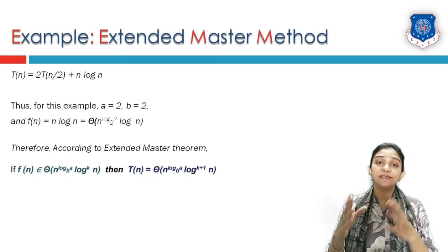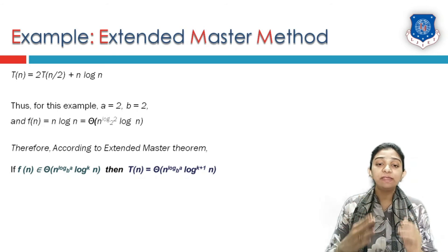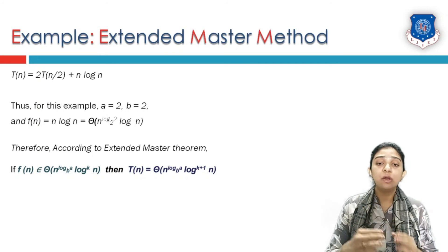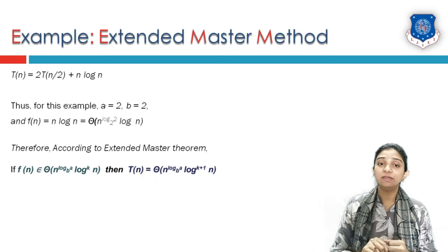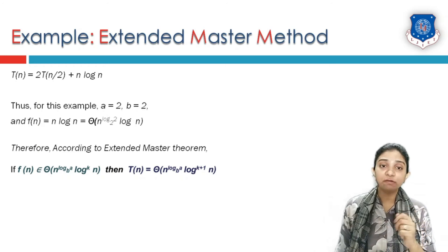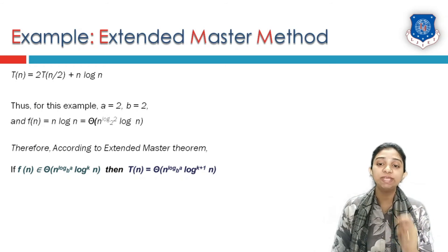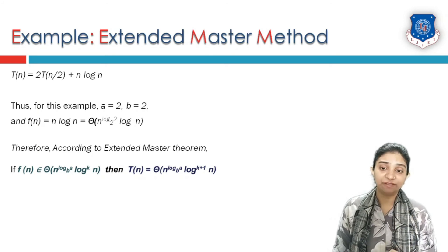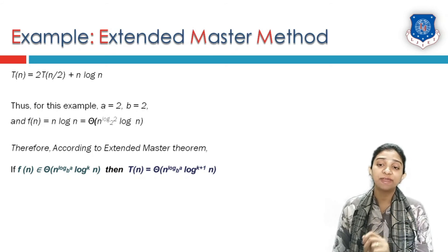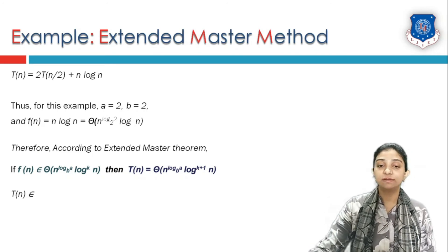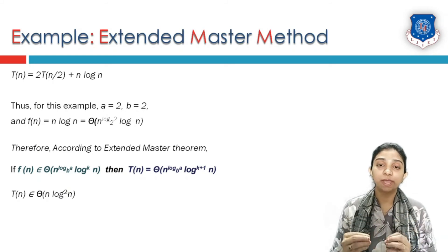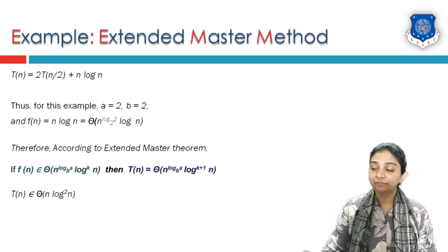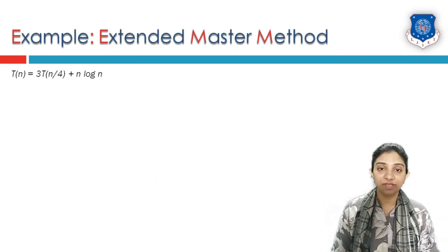Applying extended master theorem Case 1, where f(n) is in Theta(n^(log_b(a)) · log^k(n)), the complexity becomes T(n) = Theta(n^(log_b(a)) · log^(k+1)(n)) = Theta(n · log²(n)). So T(n) = Theta(n·log²n).